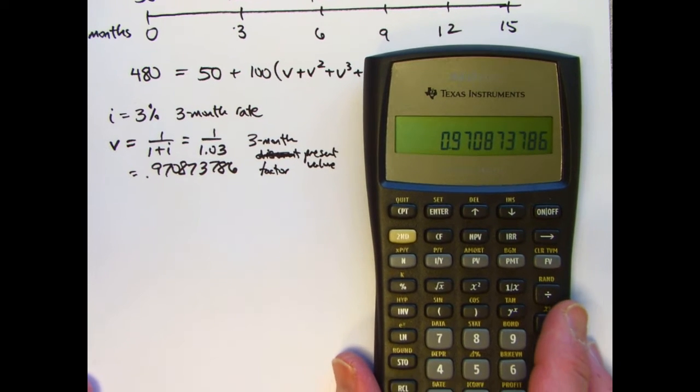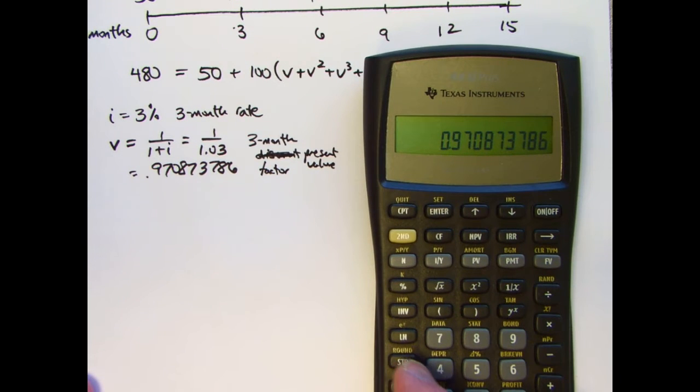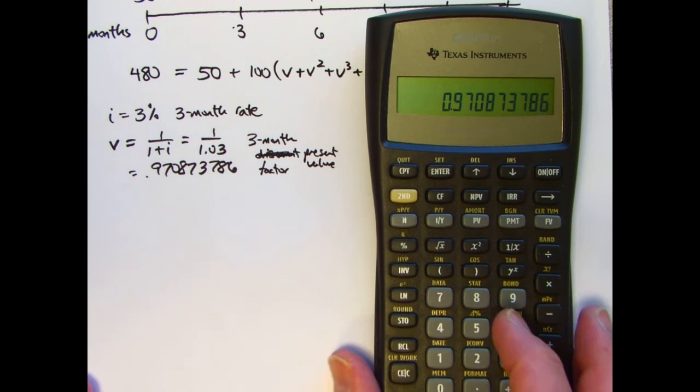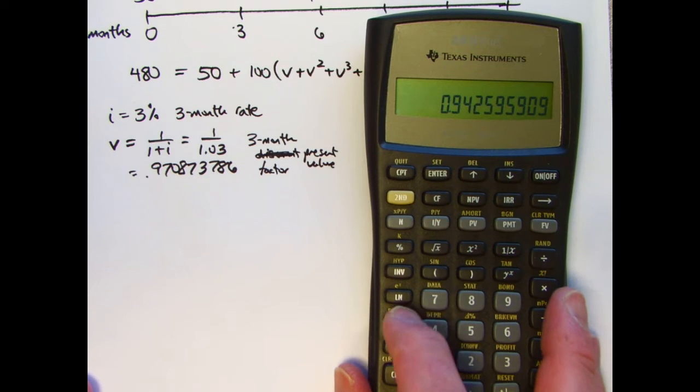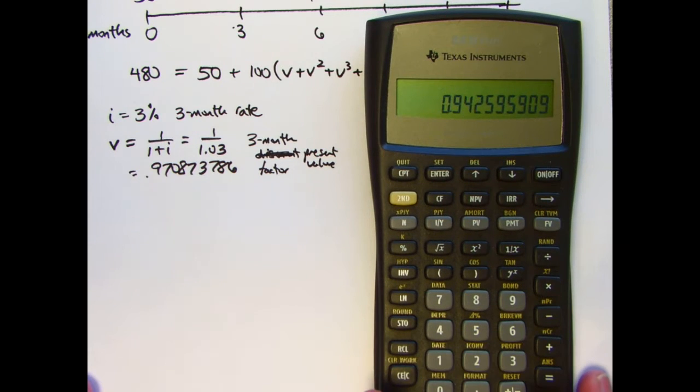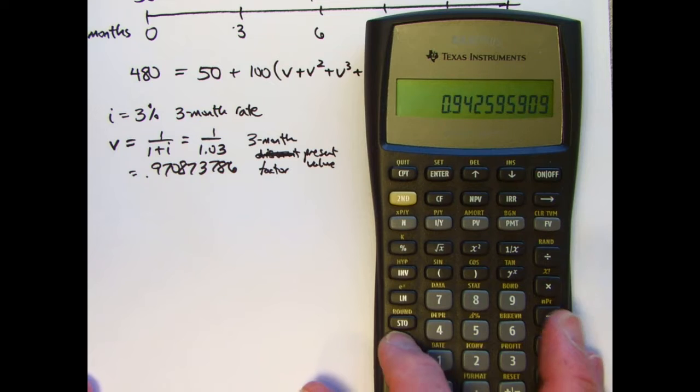So here I have V in there. That's good. Let's go ahead and put that in register one. Store STO in register one. Now let's square that thing. And store that in register two.